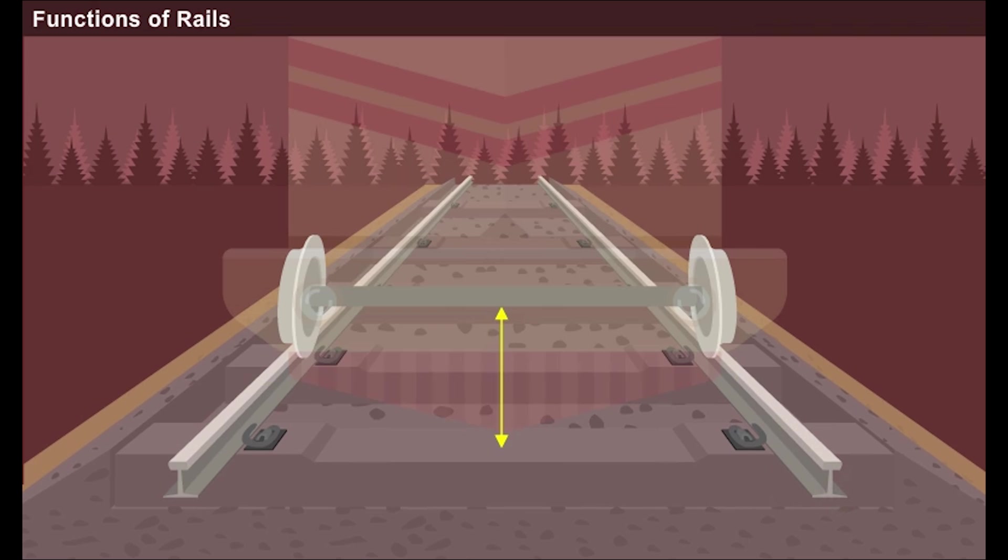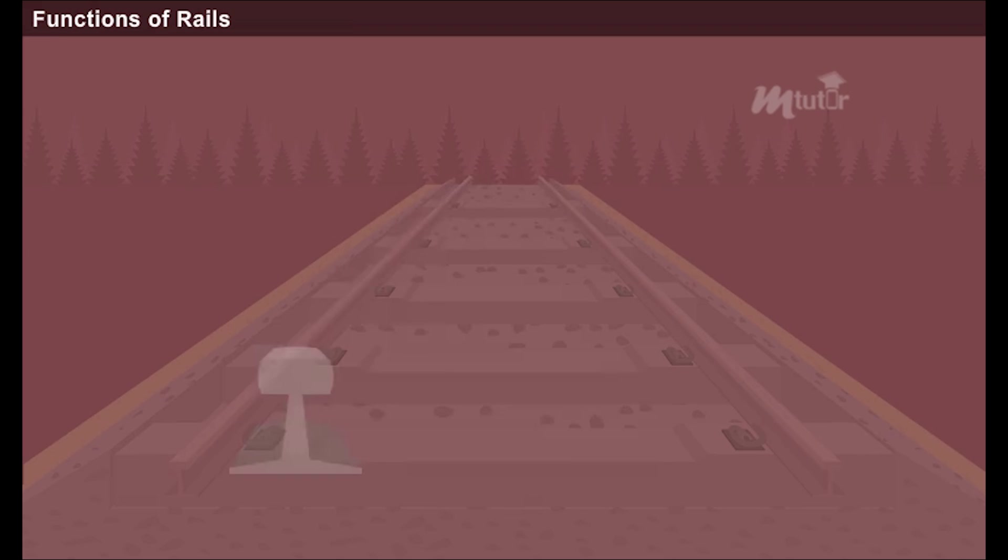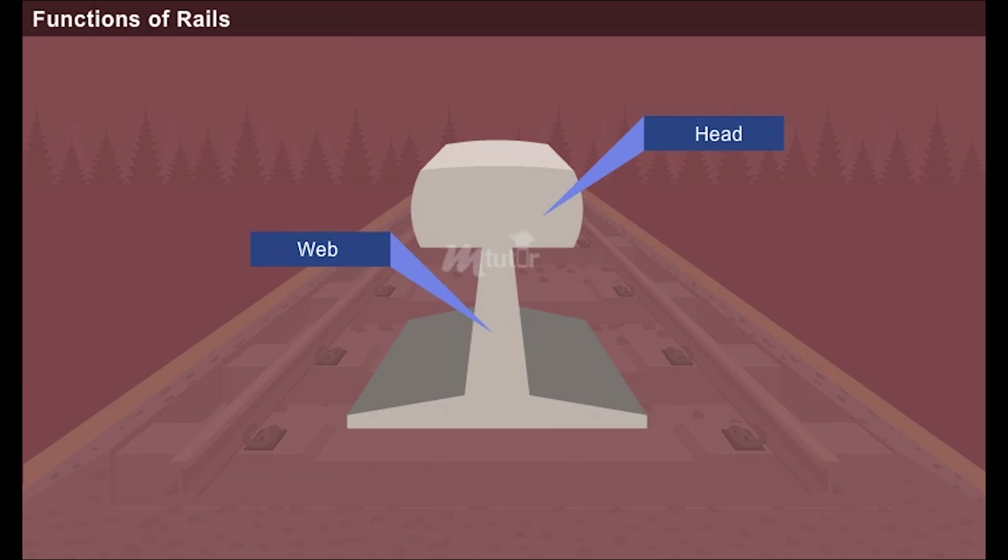The cross section of a rail resembles an eye shape with three components: the head, the web, and the base.